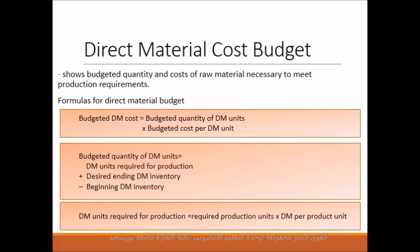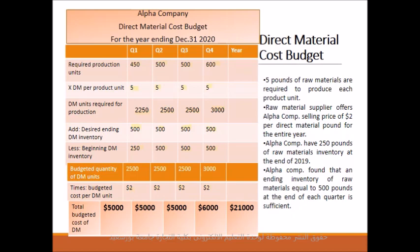The direct material cost budget shows the budgeted quantity and cost of raw materials necessary to meet production requirements. It is obtained by multiplying the budgeted quantity of direct material units by the budgeted cost per direct material unit. The budgeted quantity of direct material units equals direct material units required for production, plus desired ending direct material inventory, minus beginning direct material inventory. For Alpha Company, 5 pounds of raw material are required per product unit, at a supplier price of $2 per pound. The ending inventory of 2019 is 250 pounds, used as beginning inventory for the first quarter of 2020, with an ending inventory of 500 pounds considered sufficient.